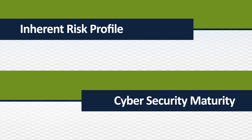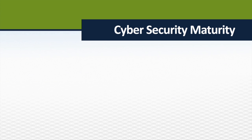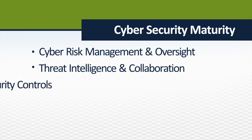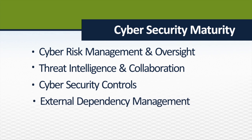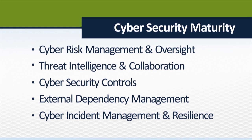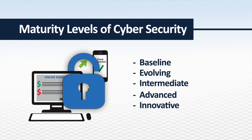After a credit union identifies its inherent risk profile, the next step is to assess its maturity level. The tool looks at a credit union's preparedness in five key areas: cyber risk management and oversight, threat intelligence and collaboration, cybersecurity controls, external dependency management, and cyber incident management and resilience. Assessment factors help credit unions determine maturity levels, including: baseline, evolving, intermediate, advanced, and innovative.